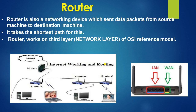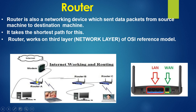Next is your router, a networking device that sends data packets from source machine to destination machine. It takes the shortest path suitable for transferring the data. On the OSI model, it works on the third layer — that is the network layer. You can see the internetworking and routing with router A, router B, and router C. The back of the router has a port for LAN and a port for WAN.